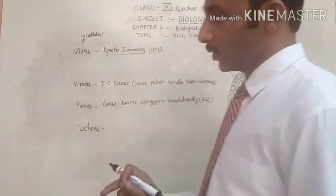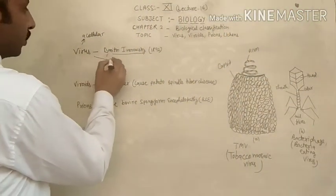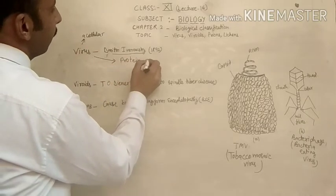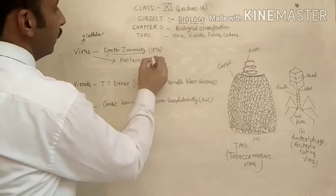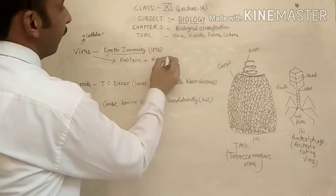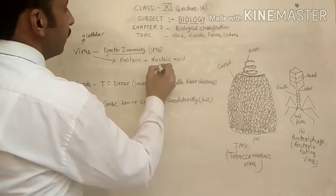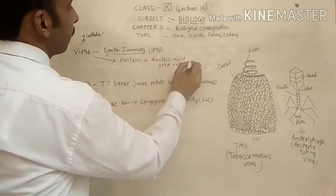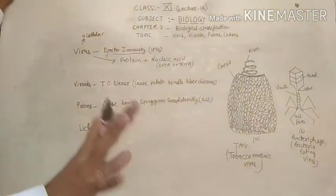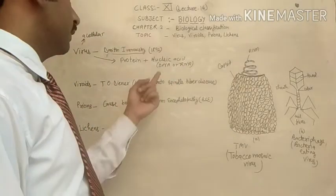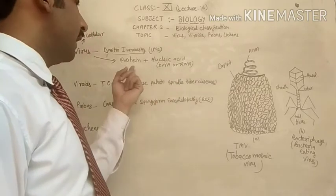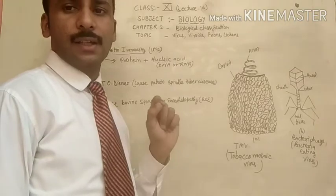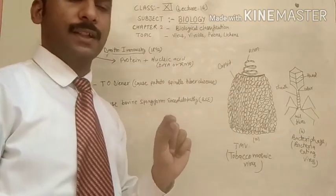Today I will tell you about the virus structure. Viruses are mostly made up of protein plus nucleic acid — DNA or RNA. Mostly viruses are made up of DNA or RNA and protein. The two main components of viruses are proteins and nucleic acid: DNA or RNA.